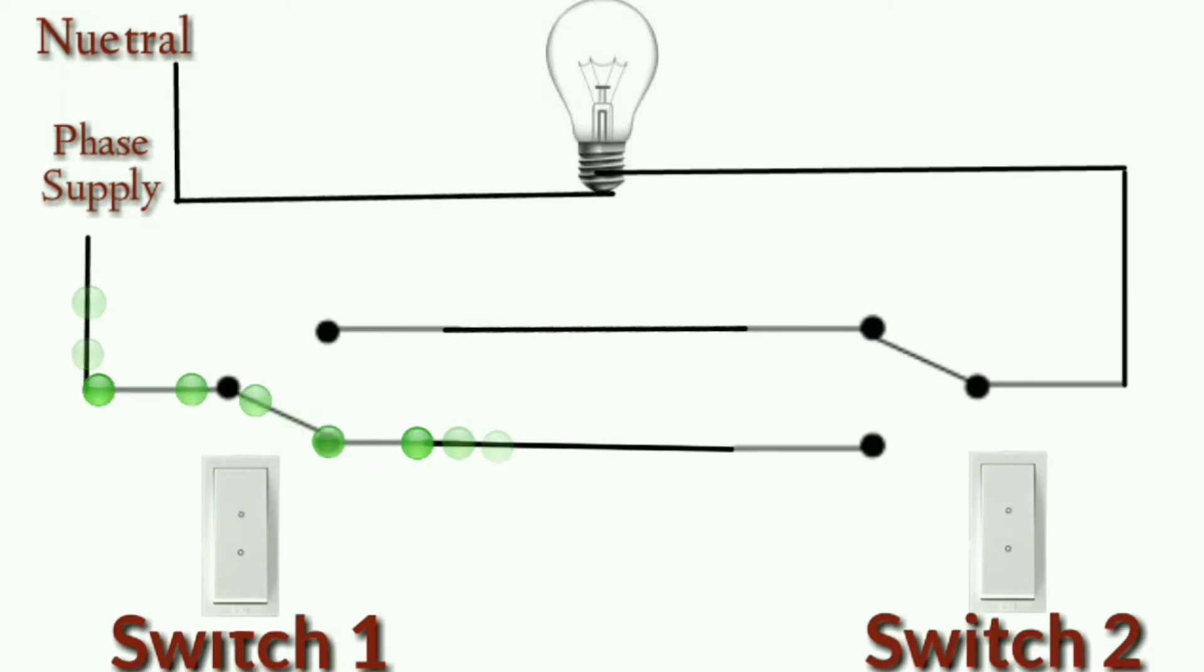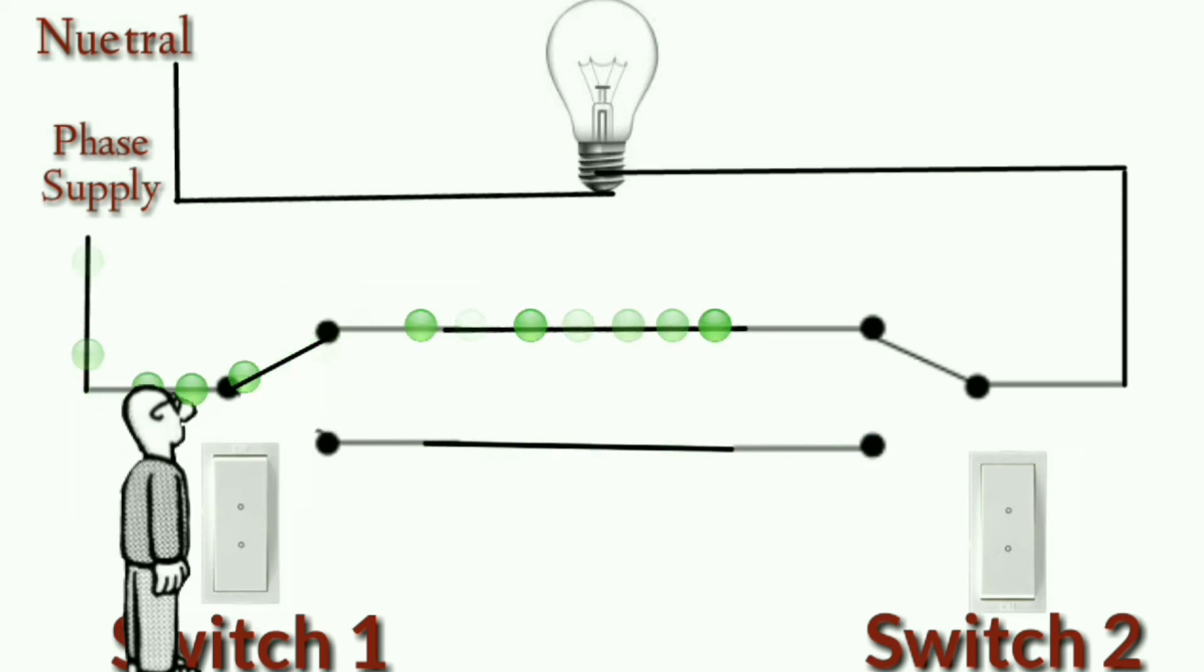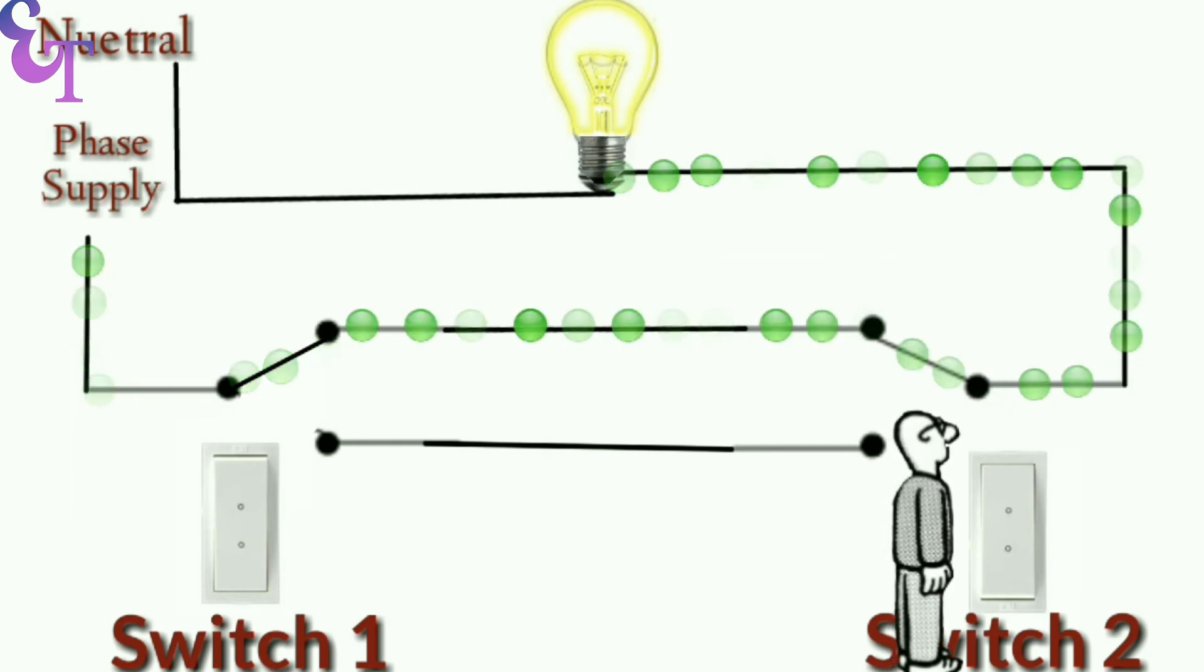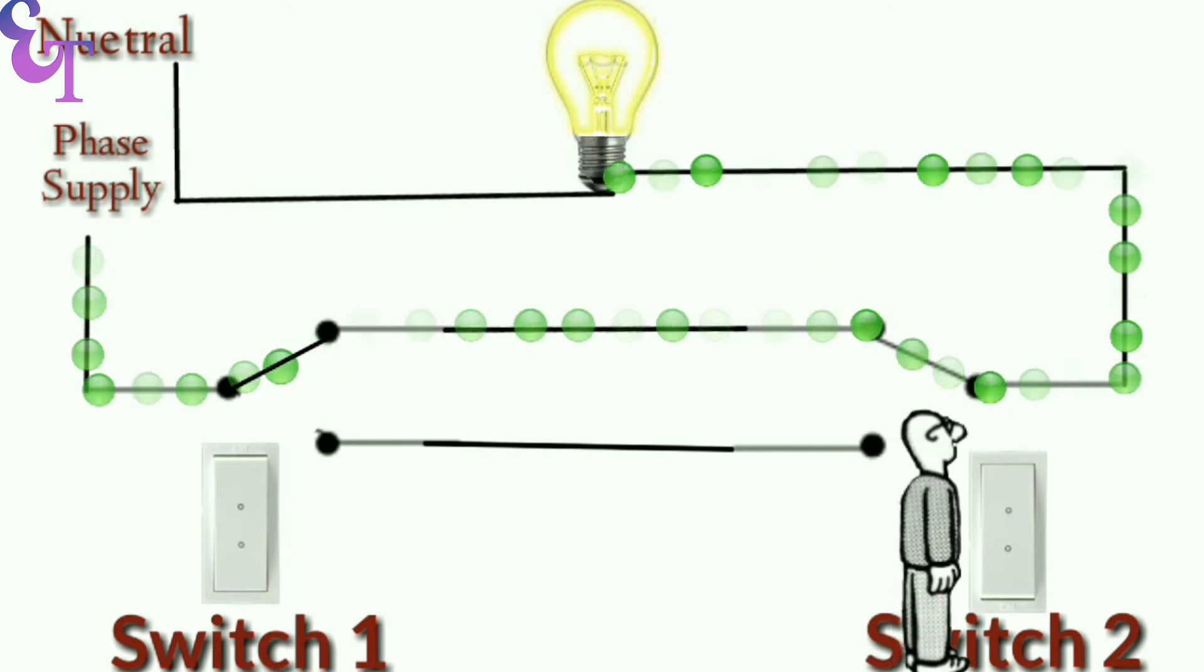As soon as we press switch one, the power supply starts going from switch one outgoing terminal one to switch two outgoing terminal one. And from there it goes to the common terminal and then it goes to the bulb. Now the bulb will turn on.